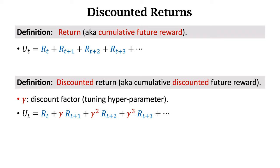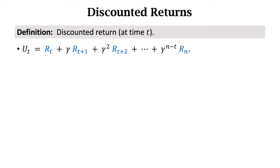With the discount, the return becomes discounted return, also known as cumulative discounted future reward. Denote it by UT. The current reward RT is not discounted. RT+1 is discounted by gamma. RT+2 is discounted by gamma squared, and so on. This discounted return is the weighted sum of rewards from time t to the end of the game. If the game stops at time n, UT is the weighted sum of RT to Rn.